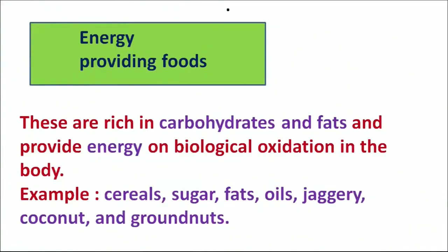Energy-giving foods include carbohydrates and fats, and as the name suggests, their basic purpose is to provide energy to the body through biological oxidation. Examples are cereals, sugars, fats, jaggery, groundnut, coconut, etc.